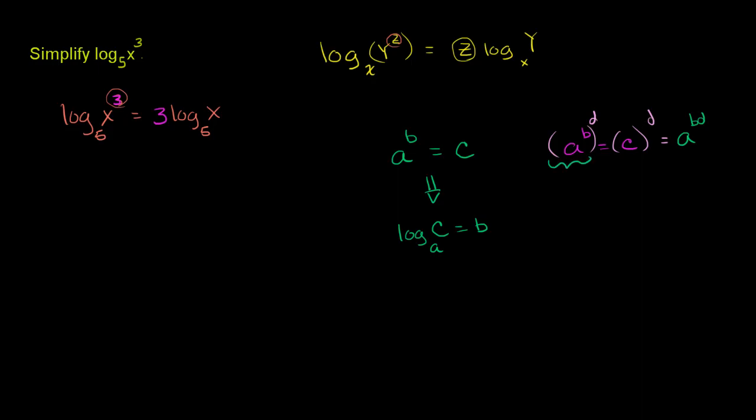This right here, using exponent properties, is the same as a to the bd power. So we have a to the bd power equals c to the d-th power.